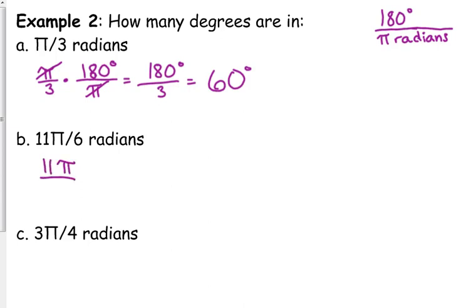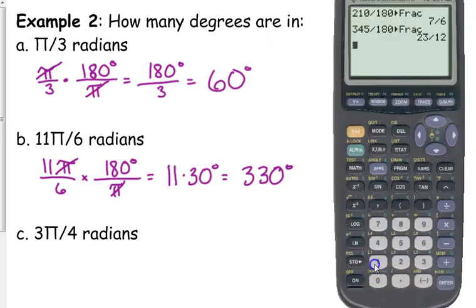11π over 6. Again, I want degrees. So, degrees is going to go on top. The 180 degrees is going to go on top. That means π goes on the bottom. Again, the π is going to cancel. I'm going to do this without my calculator. So, I'm going to simplify the 180 over 6. And that's 30. So, 11 times 30 is 330. You could have done it in your calculator. You just multiply across the top and divide by the bottom. So, 11 times 180 divided by 6. I changed the order because it's easier to divide 180 by 6 than it is to multiply 11 by 180 in your head or on the calculator.